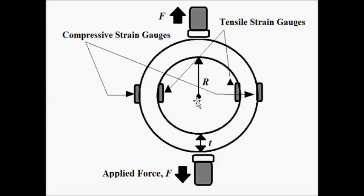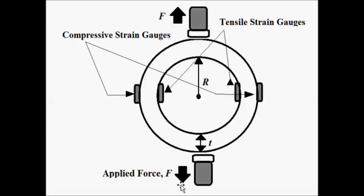Along with that, two pairs of strain gauges are placed — two along the inner side of the ring and two along the outer side of the ring. Along these two points, the force which is to be measured, or the weight which is to be measured, is applied in this direction. This is the general construction of the proving ring type load cell.